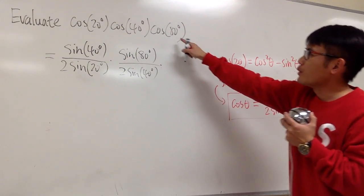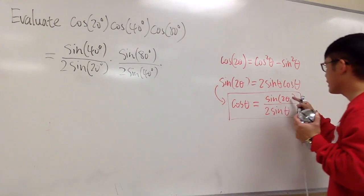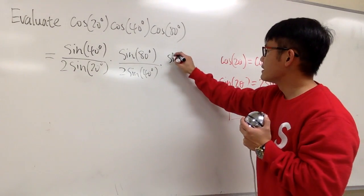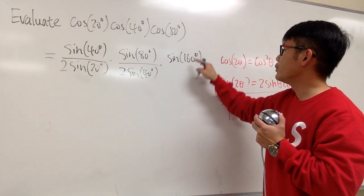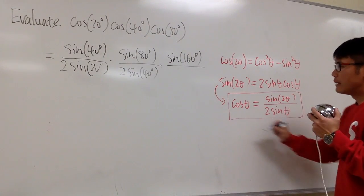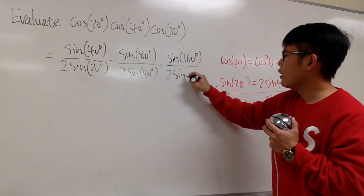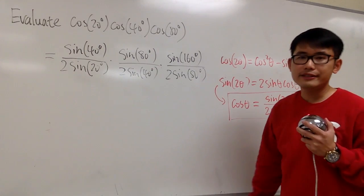And here we have angle θ is equal to 80 degrees, plug into here and here. So we will have sine of 160 degrees, 80 times 2, right? So that's 160 degrees, over 2 times sine of 80 degrees, like this.